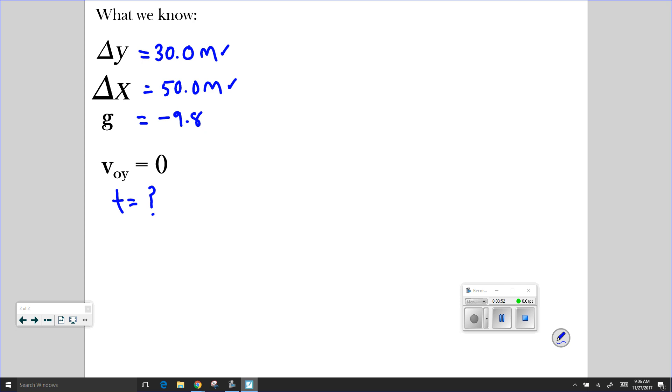So I'm going to pull out of my hat the fourth UEOM. And this time I'm going to rewrite it, though, in terms of the y displacement. I know that this term here can cancel because I know I have no initial velocity in the y direction.